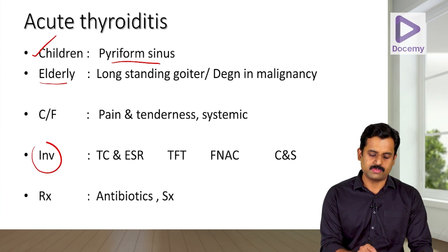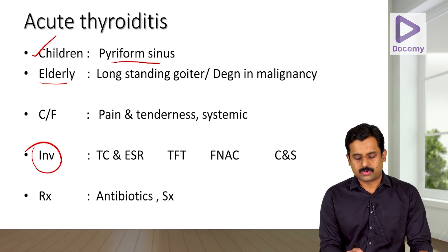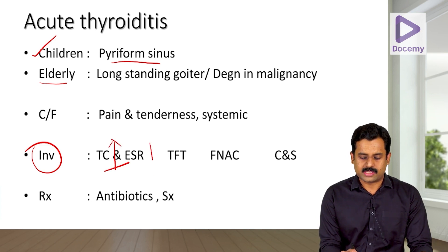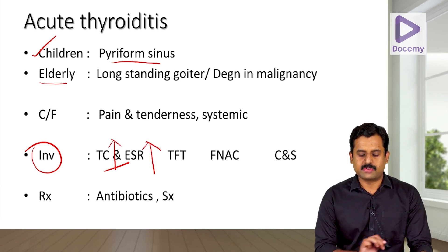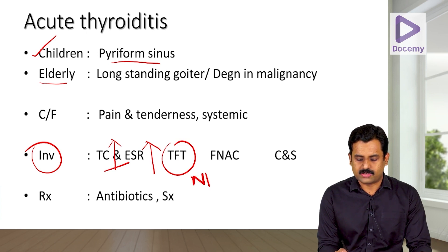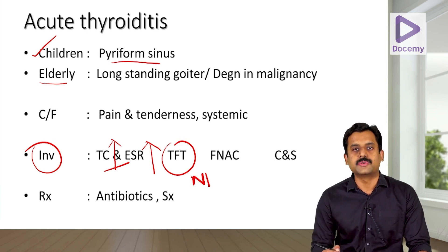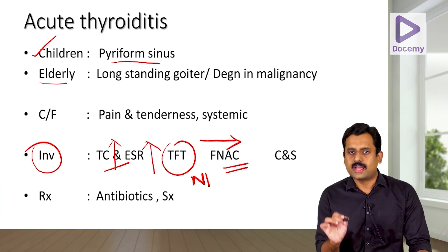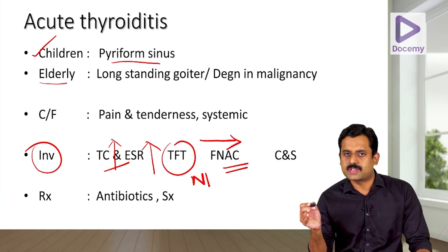For investigations, start with routine tests: total count and ESR will be elevated in acute thyroiditis. However, thyroid function tests will usually be normal in acute thyroiditis. For further investigation, you can proceed with fine needle aspiration cytology.